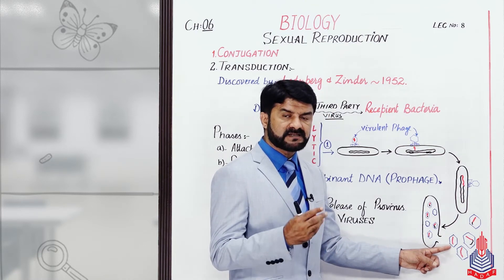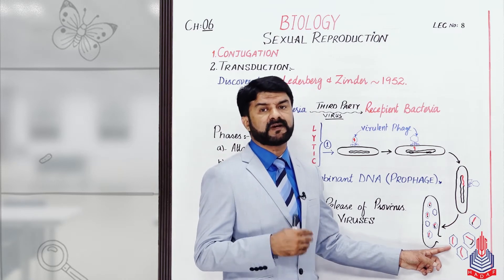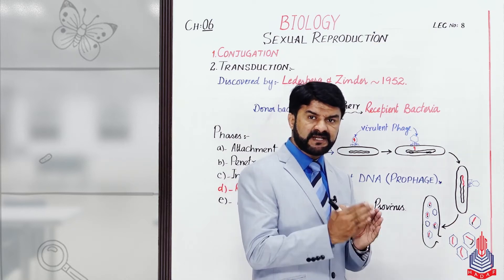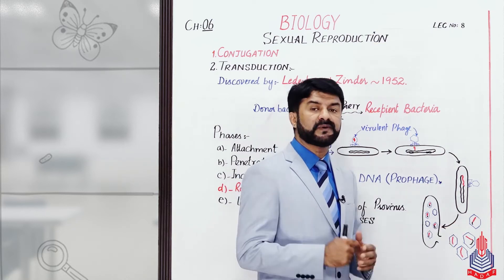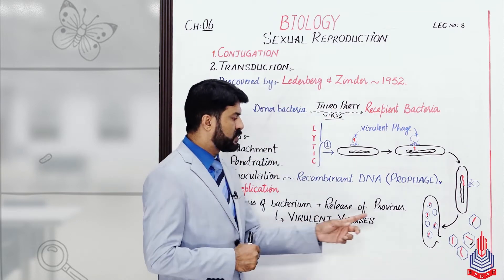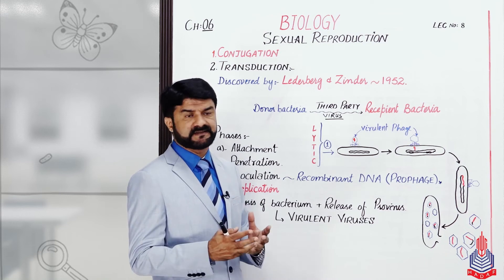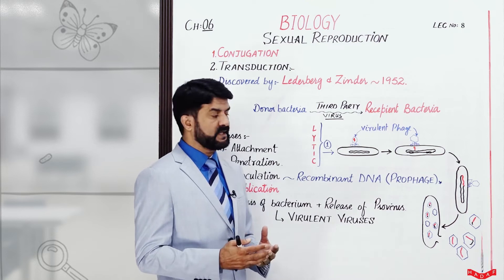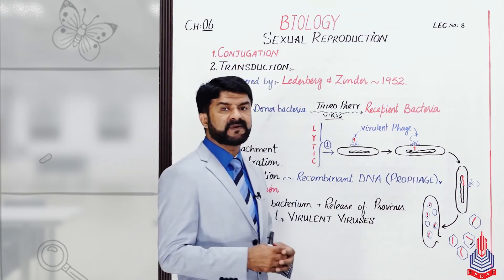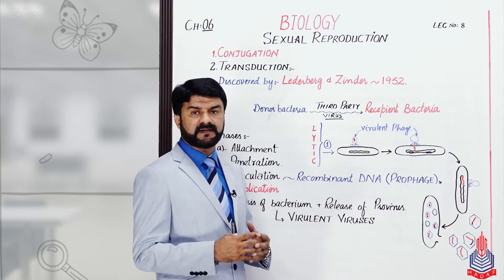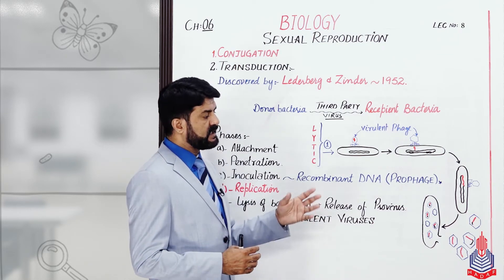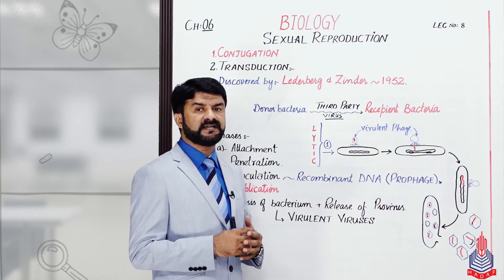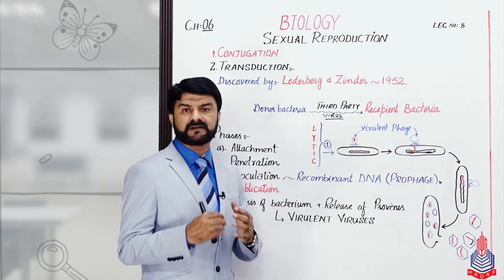جن viruses کے پاس صرف اپنا DNA ہے انہیں ہم parental viroids کا نام دیتے ہیں۔ لیکن وہ viruses جن کے پاس bacterium کا DNA بھی شامل ہو گیا ہے انہیں ہم recombinant viruses یا pro-viruses کا نام دیتے ہیں۔ یہ والے pro-viruses اب bacterium کی body سے release ہو جائیں گے اور یہ ready ہیں to infect another bacterium of the same colony۔ دیکھتے ہیں کہ اگر یہ والے viruses جا کے دوسرے bacterium کو attack کریں تو کیا ہوگا — اس کے لئے we have to go to the next part of the board۔